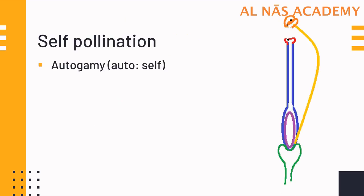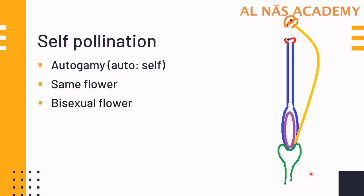In self-pollination, first we study autogamy. 'Auto' means self, so autogamy means the transfer of pollen from the anther to the stigma of the same flower. When the flower is the same, the flower must be bisexual — meaning both the male part and the female part are on the same flower. That is why when the anther releases the pollen, it falls onto the stigma of the same flower.